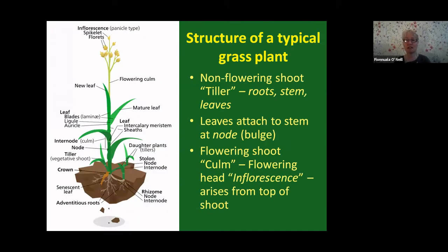The structure of a typical grass plant — most of them share the same characteristics. You have the non-flowering shoot, often referred to as the tiller, which consists of the roots, stem, and leaves, with the leaves attached to the stem at a bulge called the node. Then the flowering shoot, often called the culm, includes the flowering head or inflorescence, which arises from the top of the shoot.